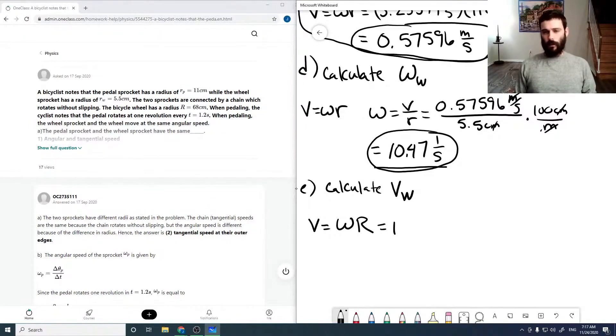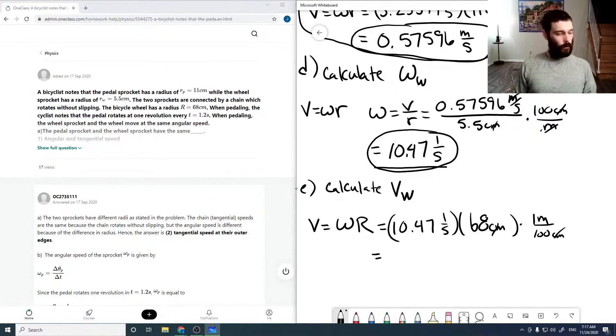So that's 10.47, 1 over seconds, times our radius, and then throwing in conversions for meters per second, which is then, if we run this through our calculator, 7.12 meters per second.